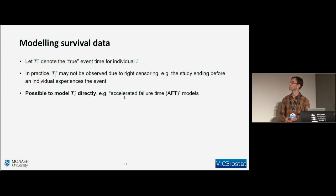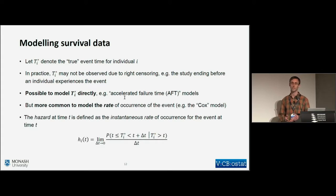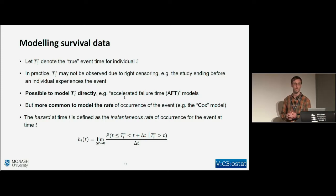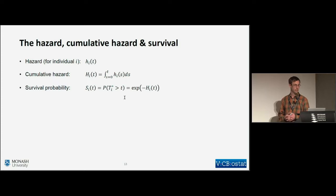It's possible to model the event time directly — accelerated failure time (AFT) models are an example of this — but it's more common to model the rate of occurrence of the event. The famous Cox proportional hazards model is an example where we model the rate rather than the time to event directly. We define the hazard at time t as the instantaneous rate of occurrence: the probability that the event occurs in some small future interval delta t, given the individual is still alive, taken as a rate as delta t shrinks to zero.